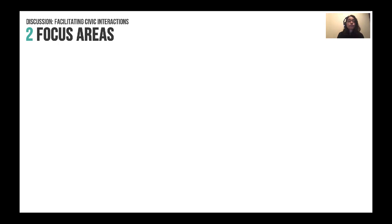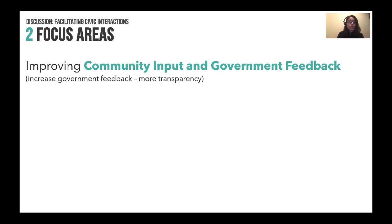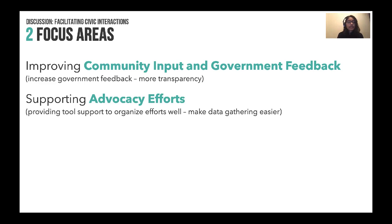In our paper, we focused on two areas which needed strengthening within urban accessibility. One being improving community input and government feedback — looking at how to improve government feedback, increase transparency, and as a result sustain civic participation over time. And second, how do we support advocacy efforts? What types of tools and interactions do we need to improve in order to make organizing efforts more efficient and effective? For example, one area was making data gathering easier. For more details, please refer to our paper.